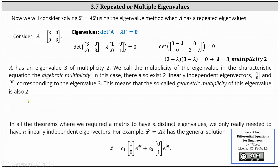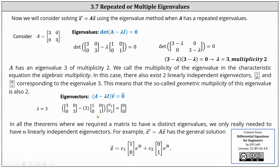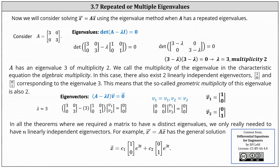Let's review how we found these eigenvectors. We set up the equation: the difference of A and lambda I times vector V equals the zero vector, and determine eigenvector V. For lambda equals three, simplifying gives us the zero matrix times V equals zero, indicating both V1 and V2 are free variables. Setting V1 equal to one and V2 equal to zero, and then V2 equal to one and V1 equal to zero, gives us two linearly independent eigenvectors.